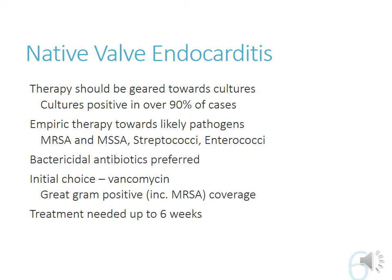These are blood cultures you're getting rather than directly from the valve, since that's far more invasive. Because this is a difficult infection to treat, we prefer bactericidal antibiotics — cell wall synthesis inhibitors are good for that, since you want to actually eliminate that vegetation. Initial choice: vancomycin provides great empiric coverage for endocarditis, primarily covering gram-positive organisms including MRSA. Treatment could be needed up to six weeks in duration.